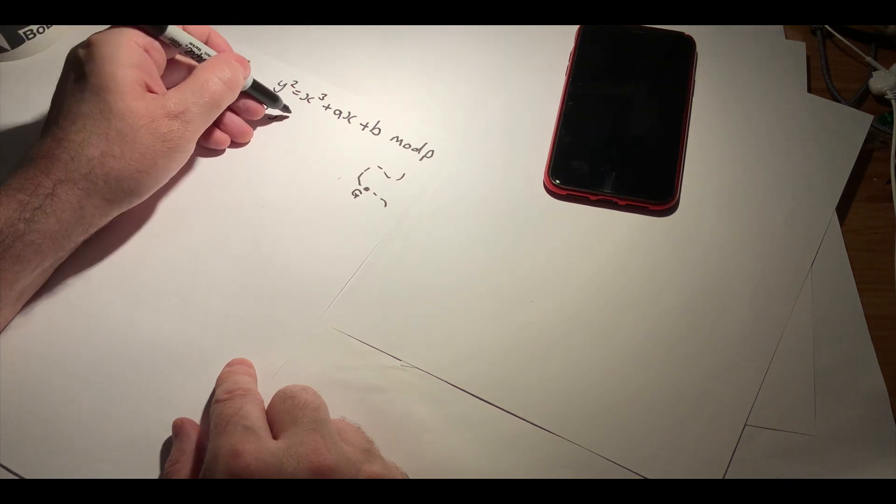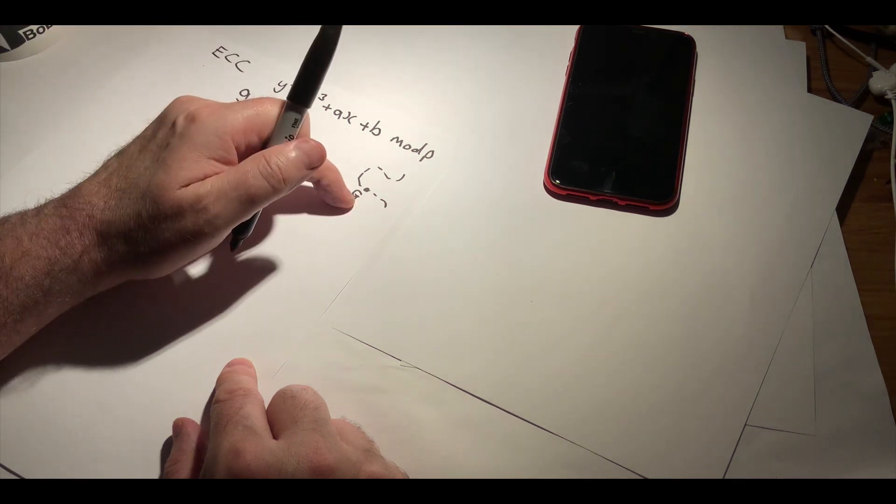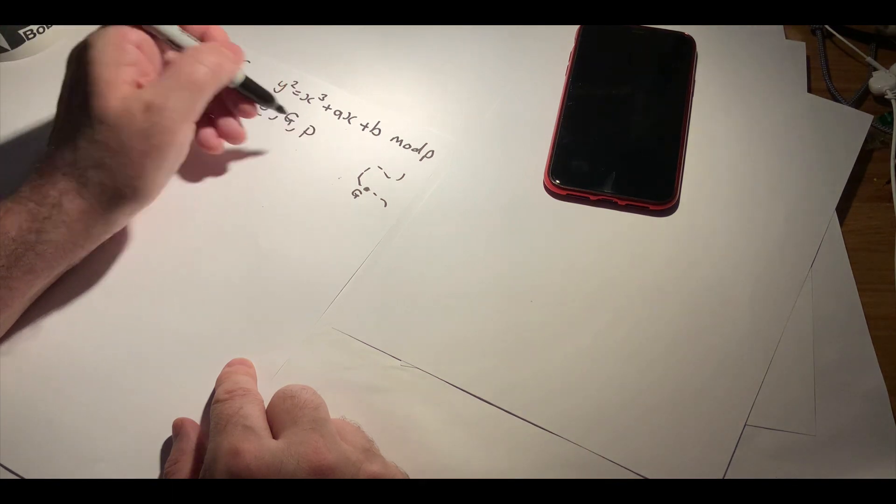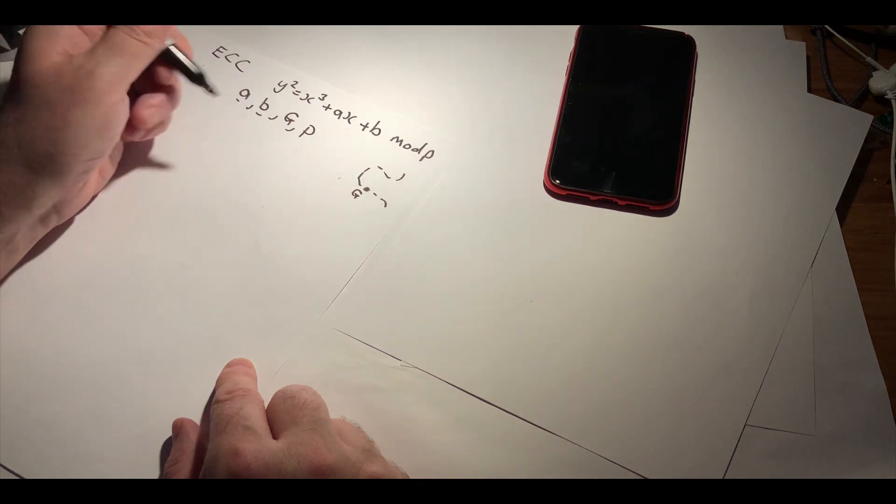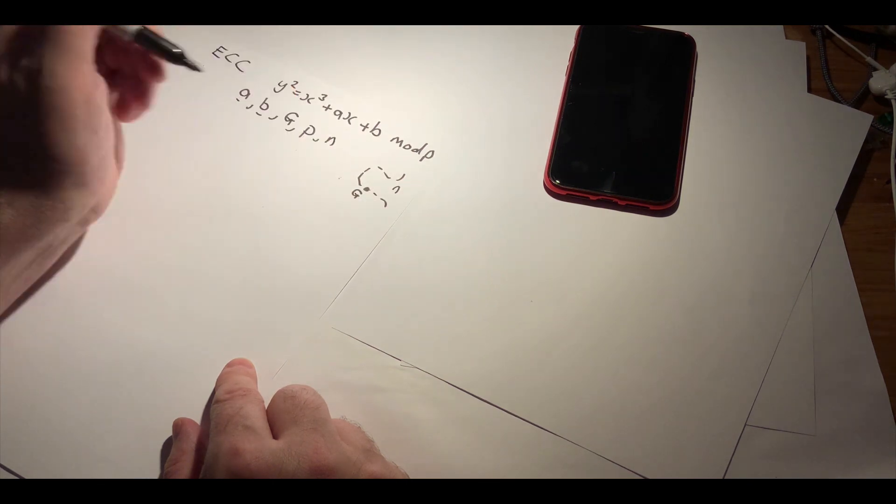It's an xy point, g, that's the base point of the curve. Then we pick p, the prime number, and finally we have what's called n, which is the order.